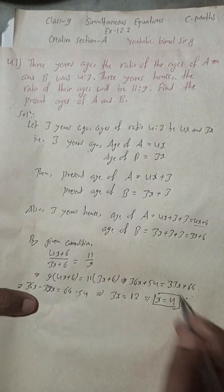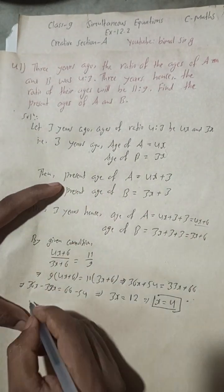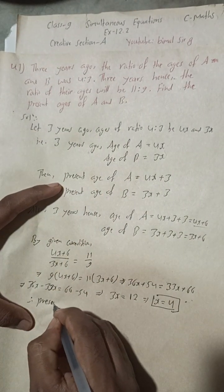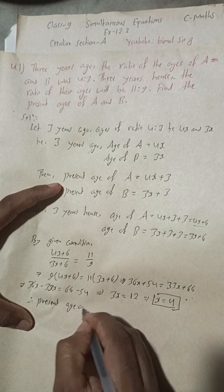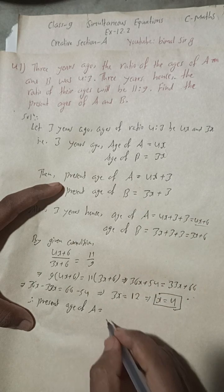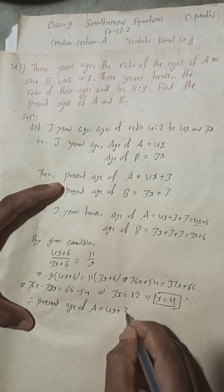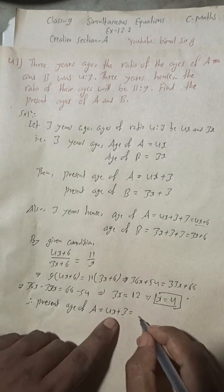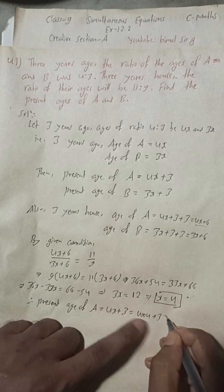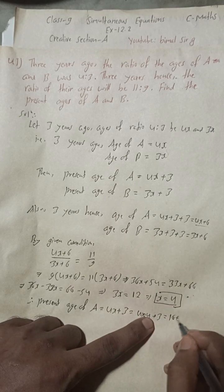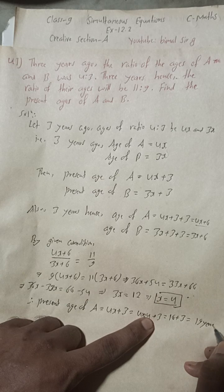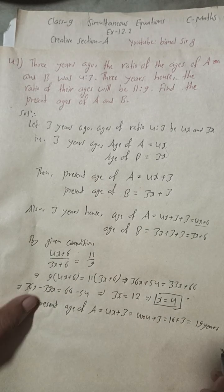Therefore, the present age of A is equal to 4X plus 3. Substituting X equals 4: 4 into 4 is 16, plus 3 gives 19 years.